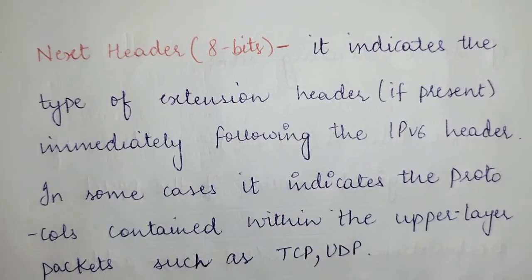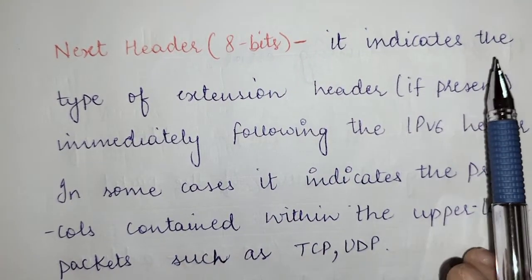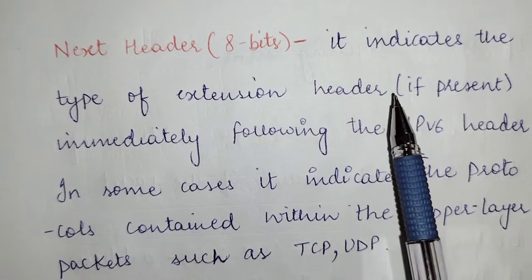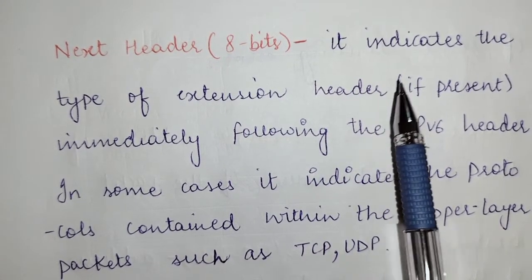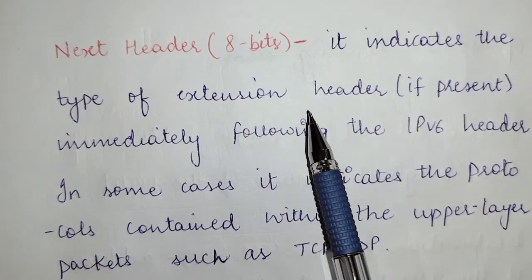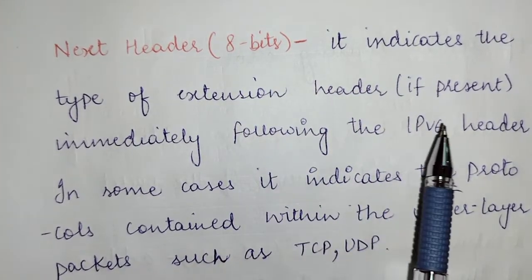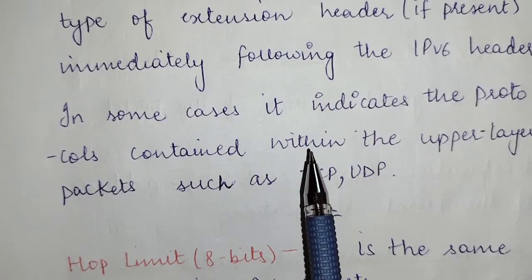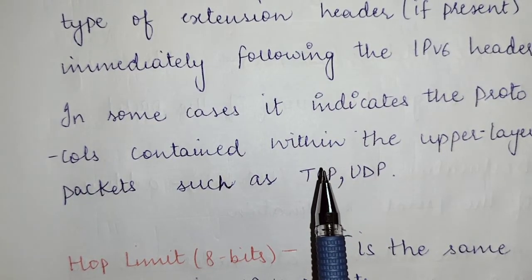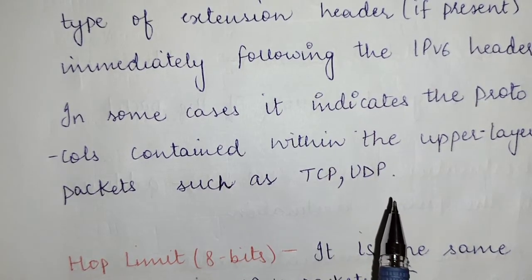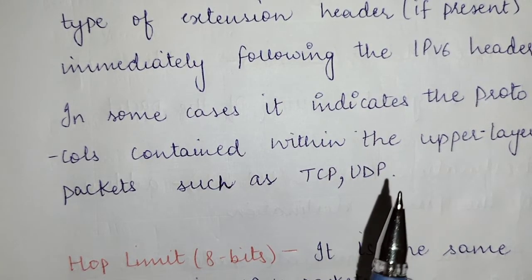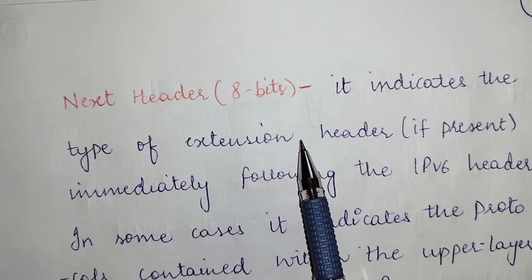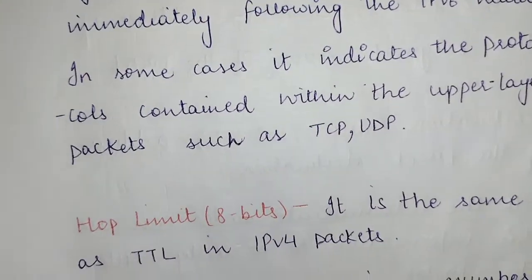The next header field is 8 bits. It indicates the type of extension header present immediately following the IPv6 actual header, if one exists. In some cases it also indicates the protocol contained within the upper layer — for example, whether the upper layer uses TCP or UDP.